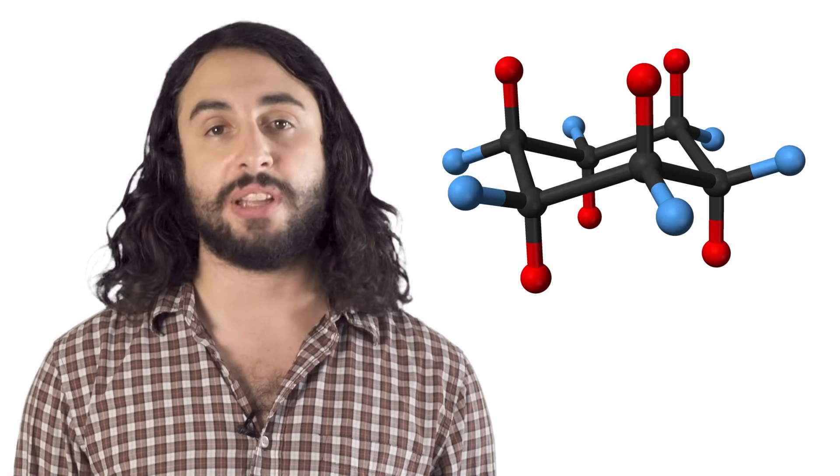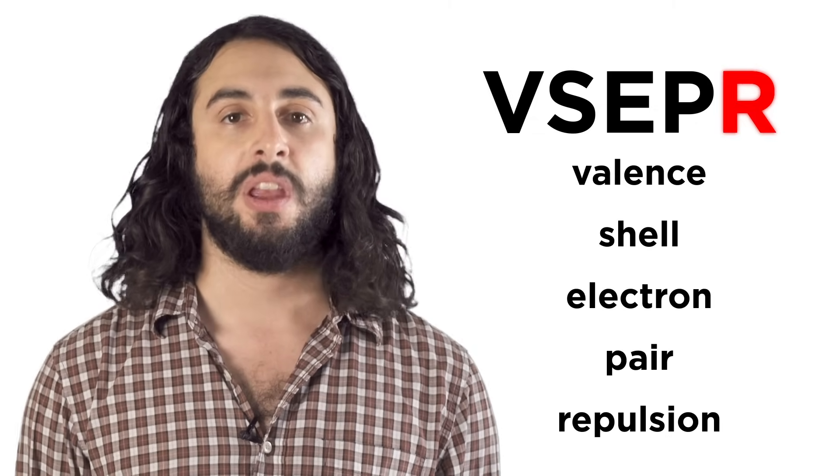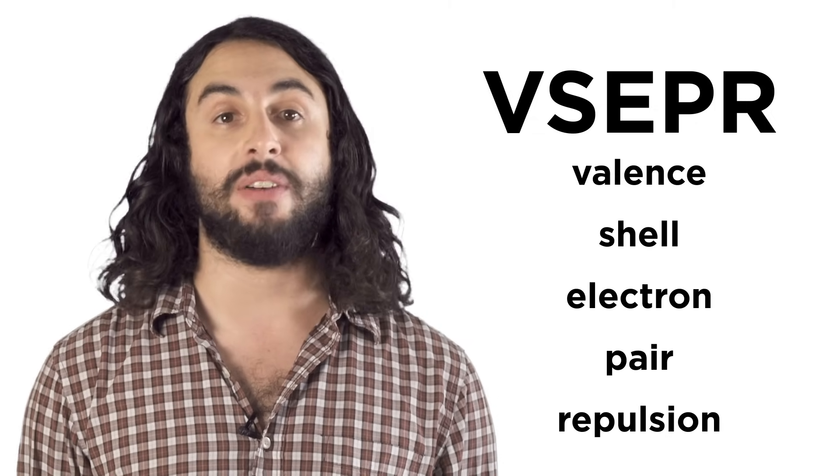A model we can use to analyze molecular geometry is called the VSEPR model, which stands for valence shell electron pair repulsion. This is how we will predict the shape of a molecule.